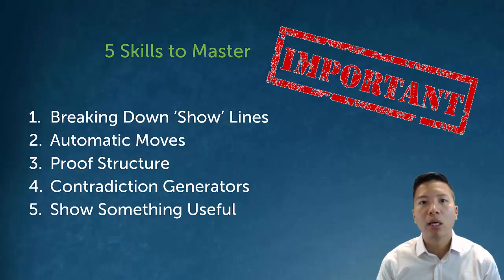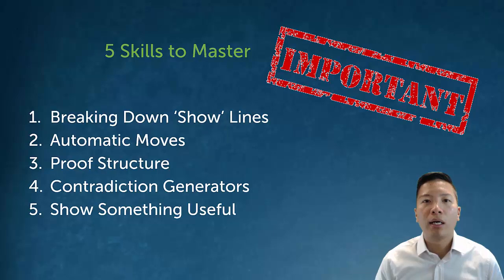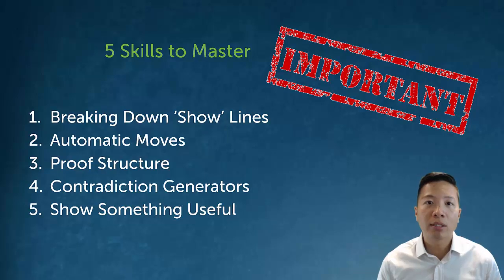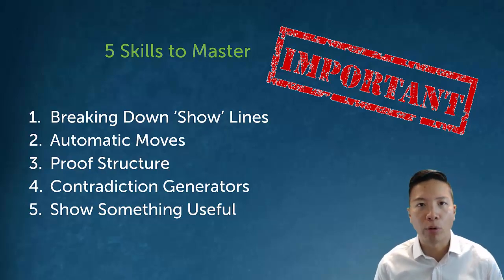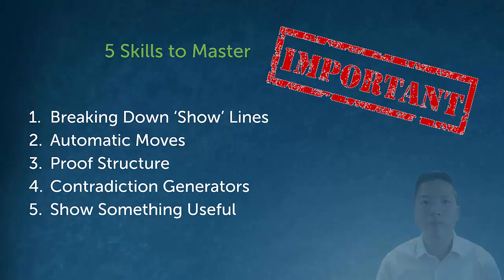Third, proof structure — these are our introduction rules at work. Proof structure tells us that if I want to show an and statement I should show both sides, or if I want to show an or I should just show one side. The last two skills take practice: contradiction generators are really helpful when stuck — show the unnegated form. And in general, if you have nowhere to go, show something useful, like an antecedent so you can modus ponens. Showing something useful is the hardest skill to master.